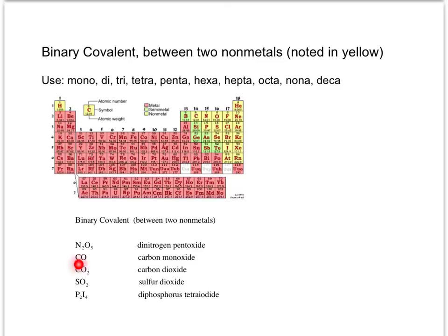Carbon monoxide is a good example. You might say monocarbon monoxide, which is not completely wrong, but the convention is to leave off the mono in front of the first element. So we say carbon monoxide, not monocarbon monoxide. However, we keep the mono on the second element — monoxide — to differentiate between one oxygen and two.